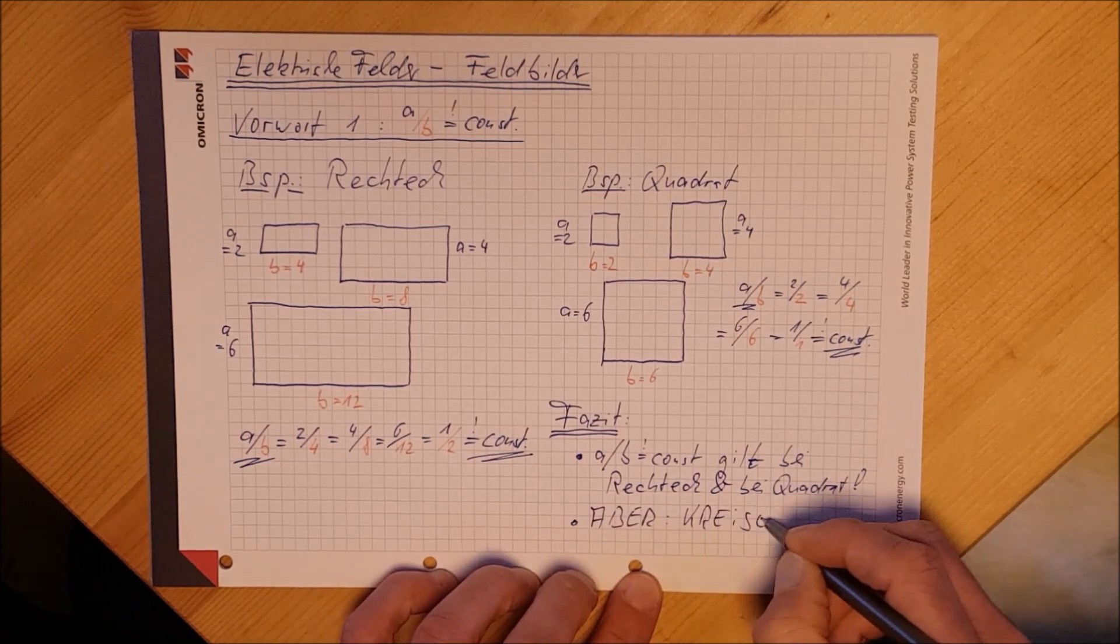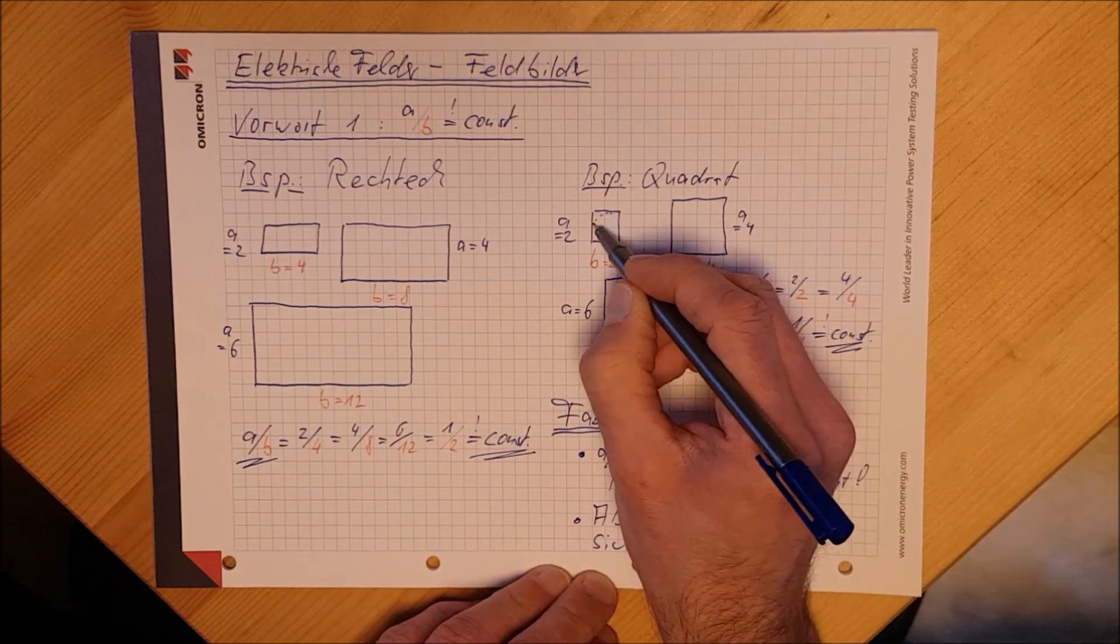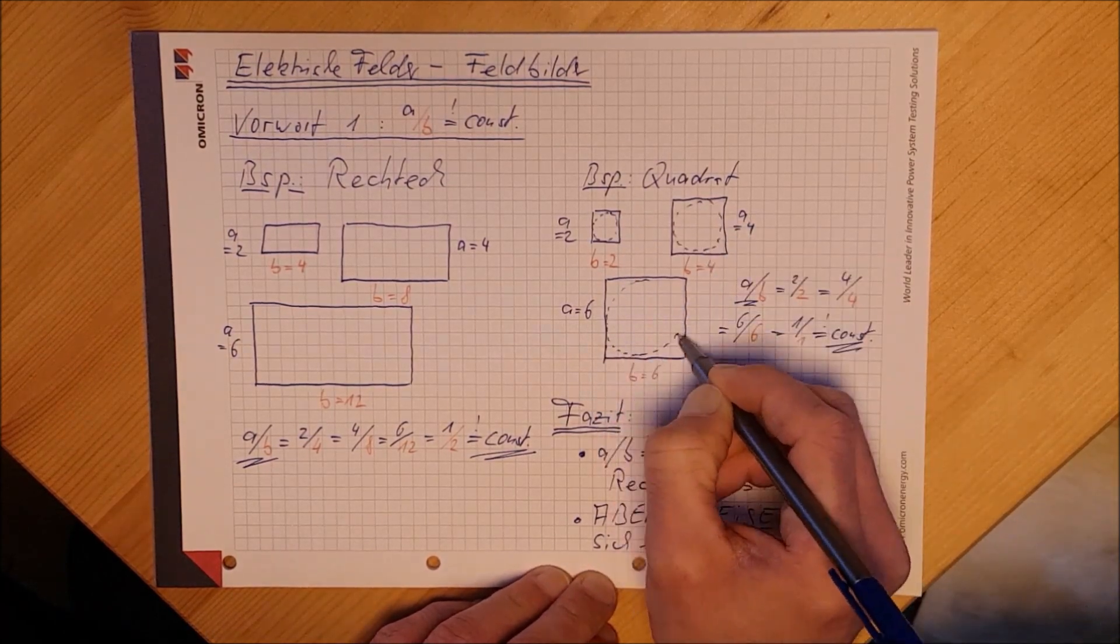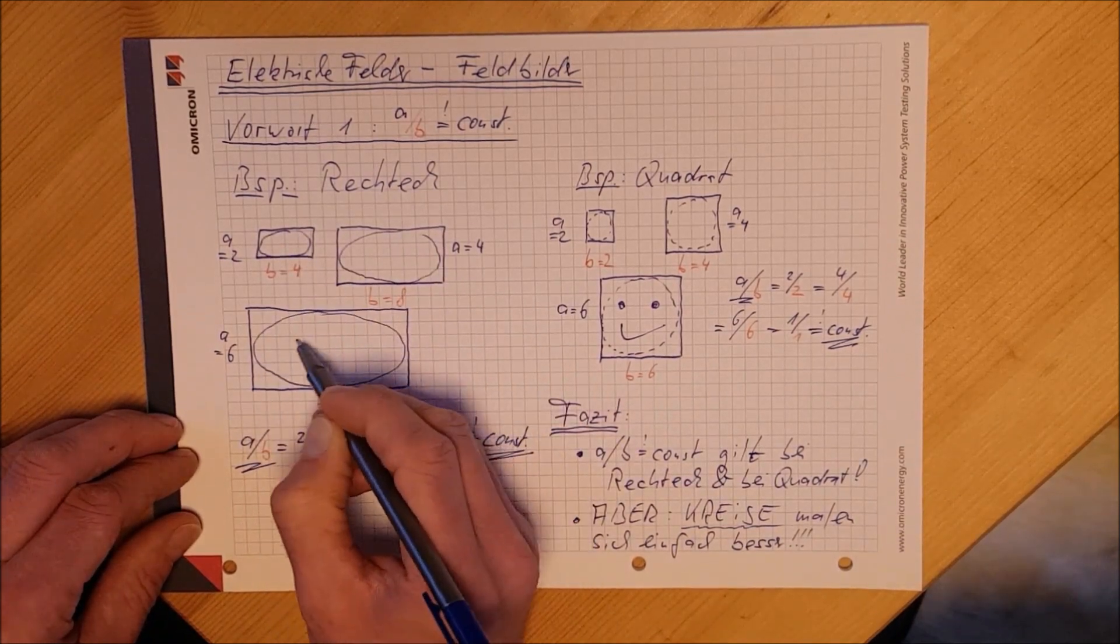Aber Kreise malen ist deutlich einfacher als gleichförmige Ellipsen. Hier passt ein Kreis rein, da passt ein Kreis rein. Wunderbar kann man einen Kreis reinmalen. Bei den Ellipsen muss man schon ein bisschen präziser zeichnen.